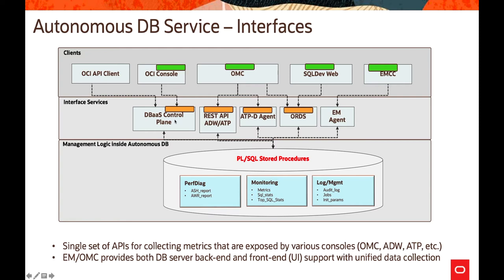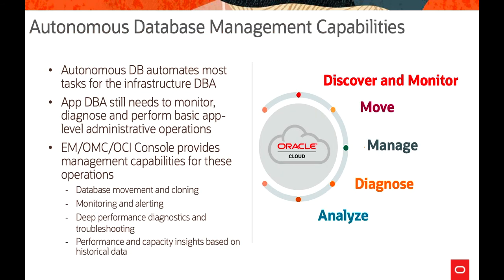ATP Dedicated has a separate agent. OCI Console uses the DBaaS control plane with an agent that handles metrics and data within the console. The management logic inside Autonomous Database includes performance diagnostics, Active Session History reports, and AWR reports. For monitoring, there are different metrics, SQL stats, and top SQL stats. For log management, audit logs, job logs, and various unit parameters can be viewed through these interfaces, providing a single set of APIs for collecting metrics exposed by various consoles. Enterprise Manager and Oracle Management Cloud provide both database server backend and frontend UI support with unified data collection.